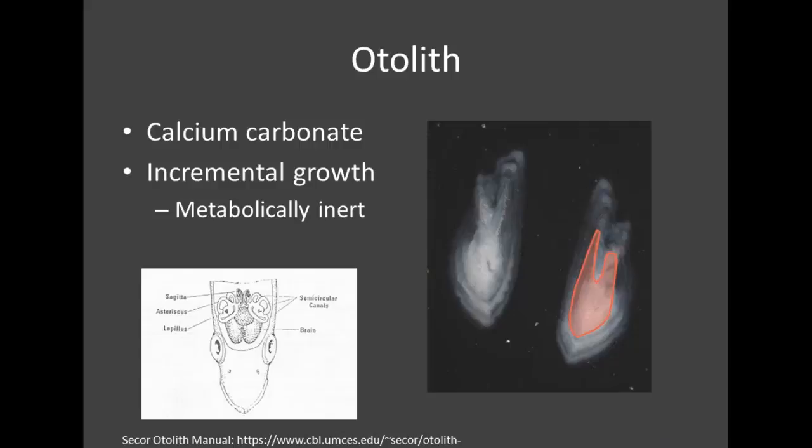For those unfamiliar with an otolith, it's a calcium carbonate structure inside the head of a fish that grows incrementally, giving us a record of age — which is really useful for fisheries scientists. The material deposited is also metabolically inert, so it maintains a record of the chemistry that fish was exposed to, and we can use that chemical record to give us an environmental history for the fish.